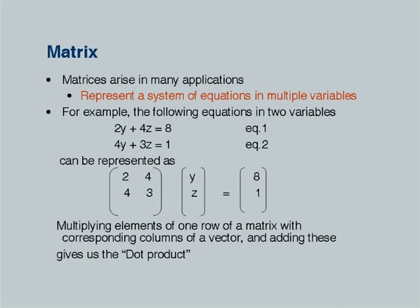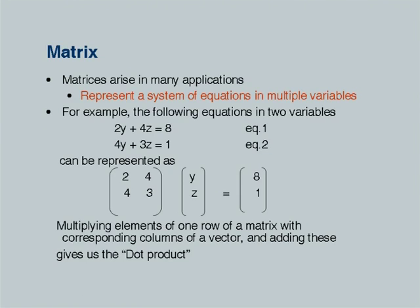Matrices arise in many applications. They are largely used to represent a system of equations in multiple variables. If I have equations 2y plus 4z equal to 8 and 4y plus 3z equal to 1, these can be represented in matrix form by putting the coefficients of y and z in a coefficient matrix A. The independent variables y and z appear in a vector, and 8 and 1 form the right-hand side B matrix. So we represent this as Ax equals B, where x is a vector.